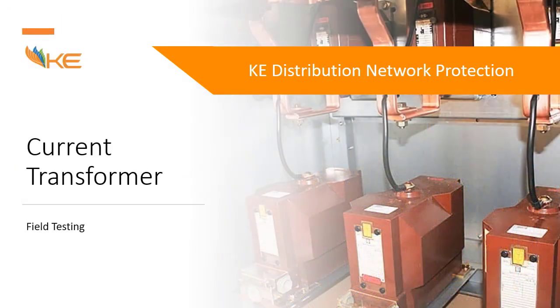Current transformers can basically be commissioned in two ways. One is that you have a new panel and new transformer. The other is that you have to upgrade your CT or replace a damaged CT with a new CT. This e-learning session will be applicable to both scenarios.